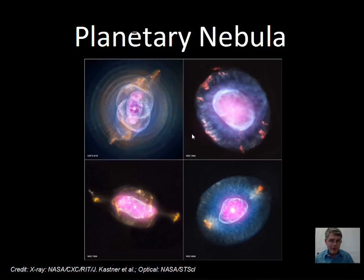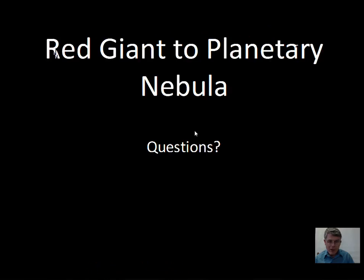The planetary nebula is gas that expanded — it used to be in the atmosphere of the star and has been pushed away. For stars less than eight solar masses, the star runs out of energy in the interior, swells up, and the atmosphere drifts away, leaving a very hot core. We'll talk about what happens to that core in another video.